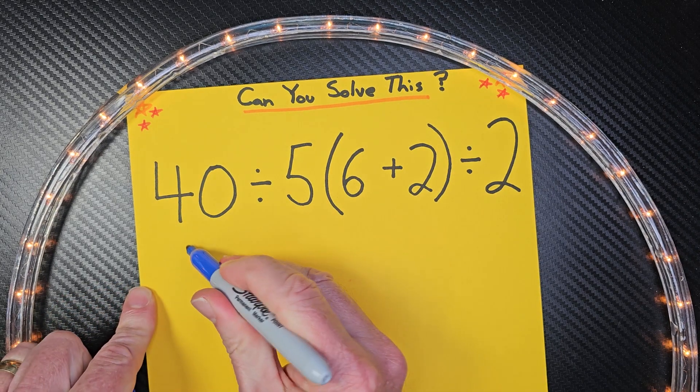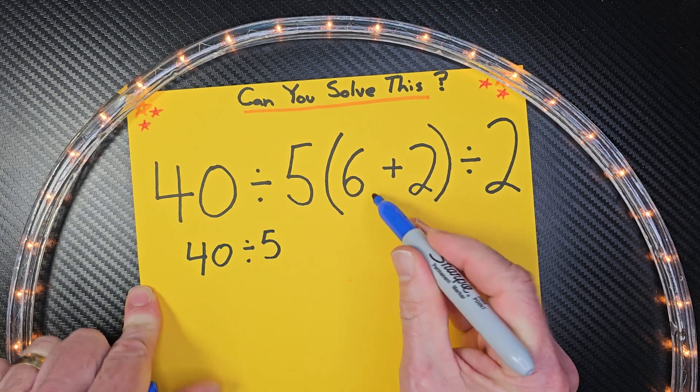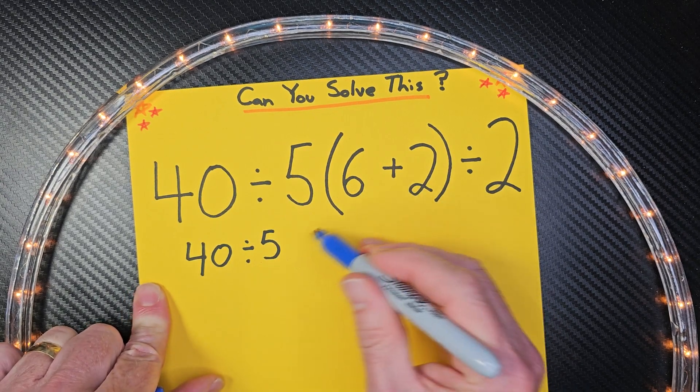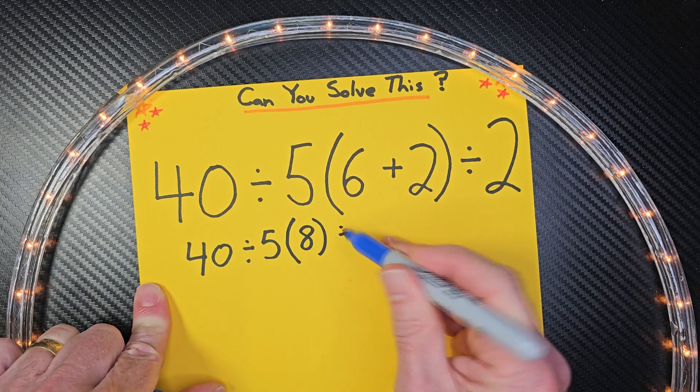So I'm going to go ahead and do 40 divided by 5, and then what is 6 plus 2? Eight. Don't be late. Eight. We'll put 8 right here, and then divide it by 2.